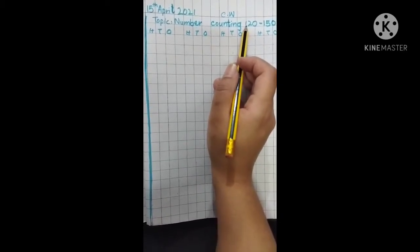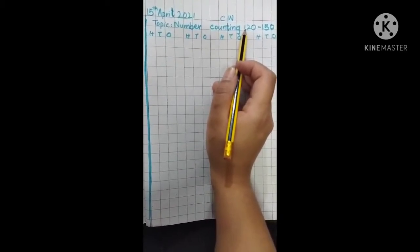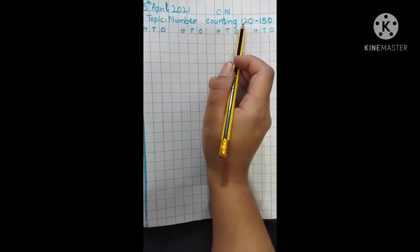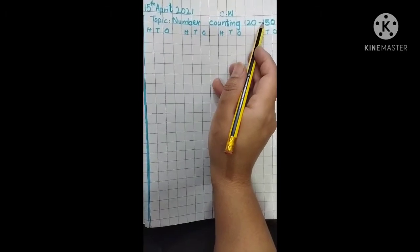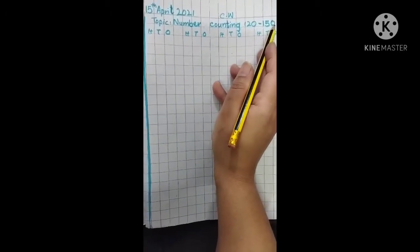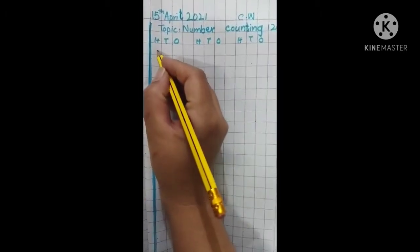So we have done counting from 100 till 120. Now today we will do counting. We will start the counting from 120 and we will complete till 150. Now it's time to start your work.